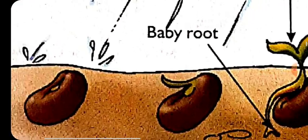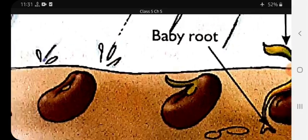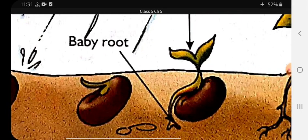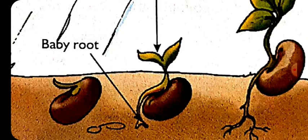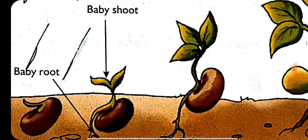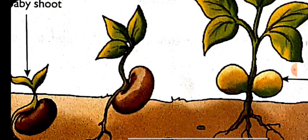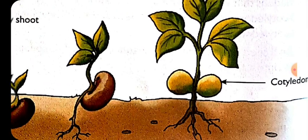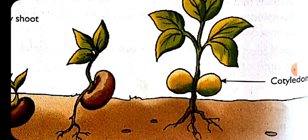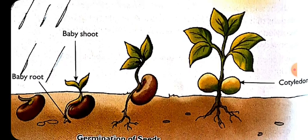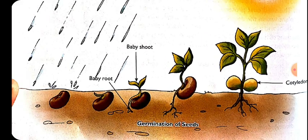First we sow a seed in the soil. After one or two days, a baby root starts coming out from the seed, and gradually the embryo fully comes out with the roots and the shoot. Further it grows, and you can see that the seed coat comes off properly. The cotyledons, which are part of the seed — if there are two, they get separated into two parts, and these cotyledons provide nutrients to the new plant for its further growth.